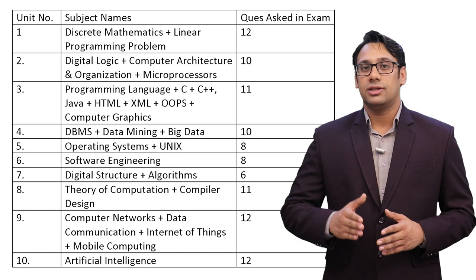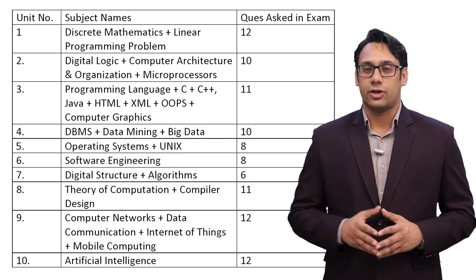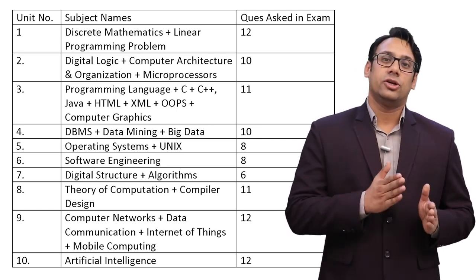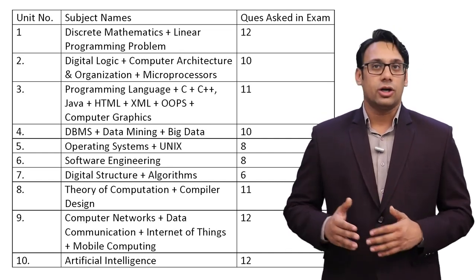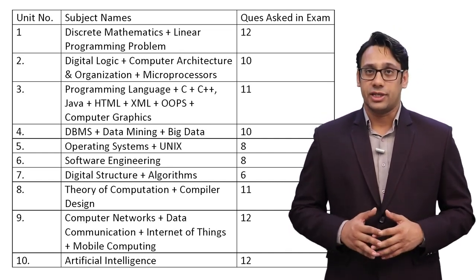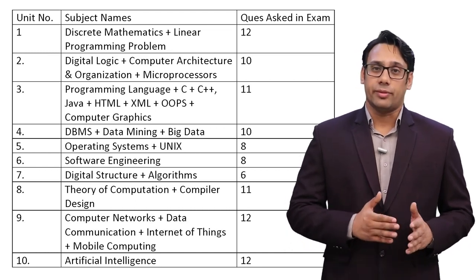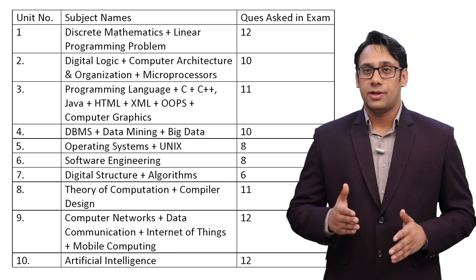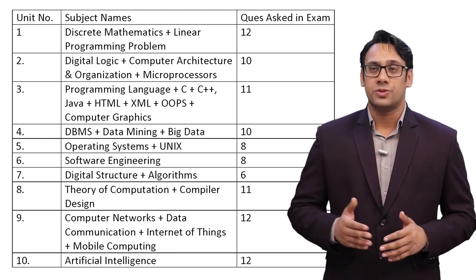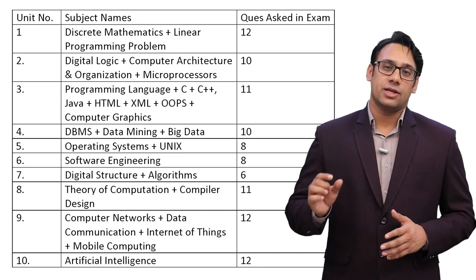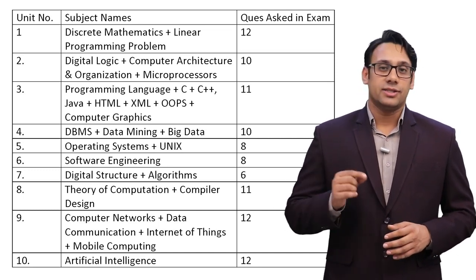Out of the 3 subjects in unit 2, they have not asked anything from microprocessor. So both digital logic and computer architecture and organization become very important — you cannot leave these two subjects. Unit 3 is programming fundamentals or programming methodology, which includes C, C++, Java, HTML, and XML.